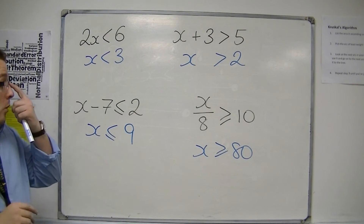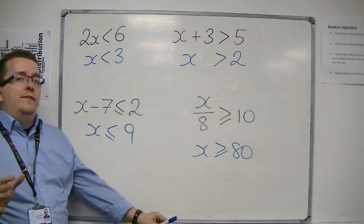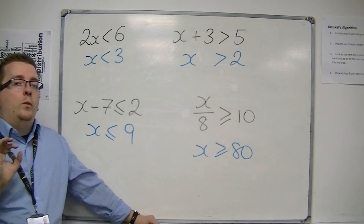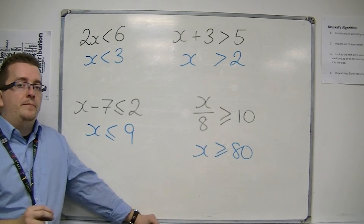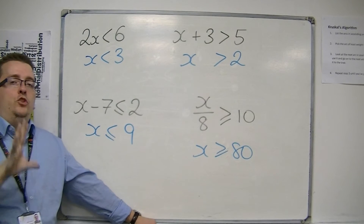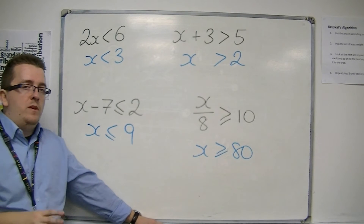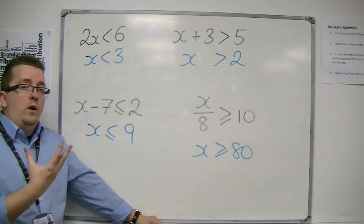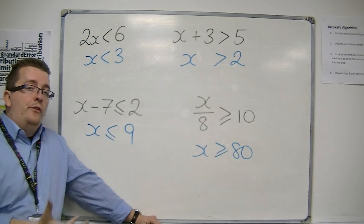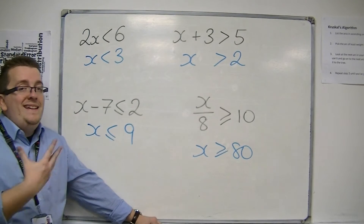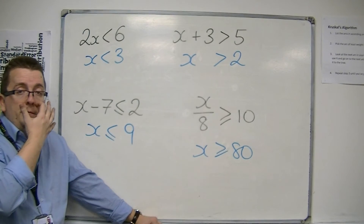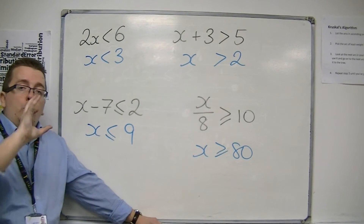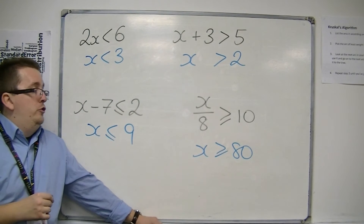Now, if you're watching this and going on to higher level, you'll know that's not quite true all of the time. If you multiply through by minus 1, or divide through by any negative number, then the symbol switches around. But we don't need to worry about that at this stage.